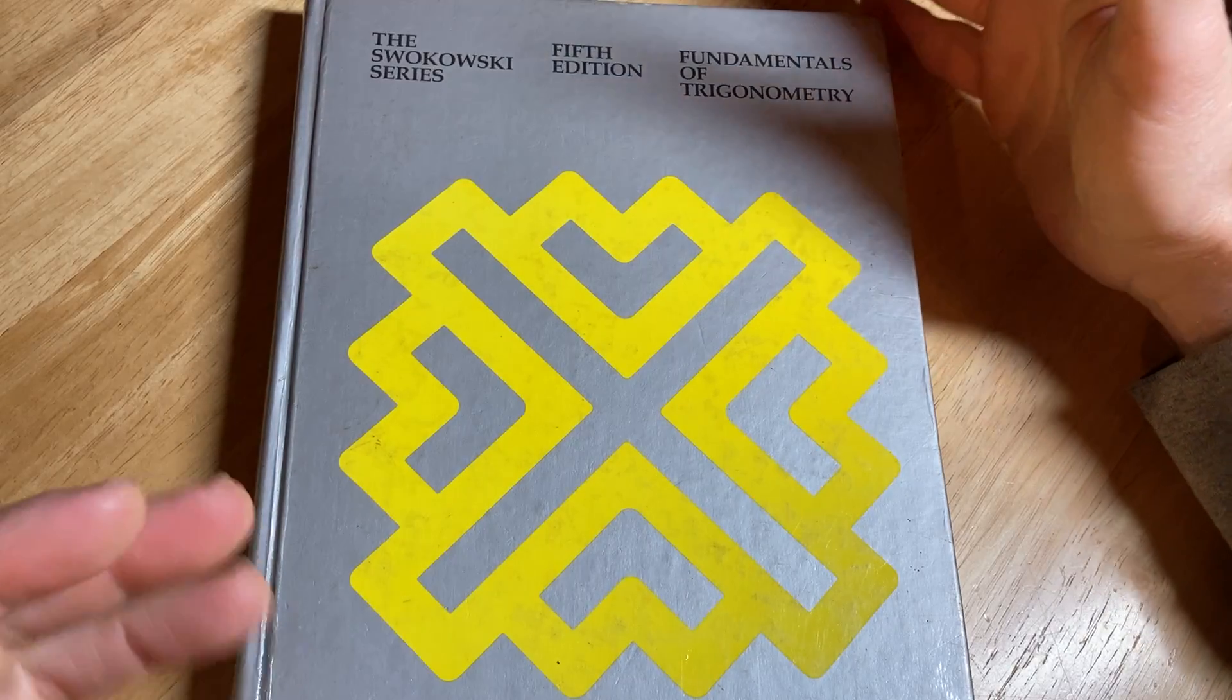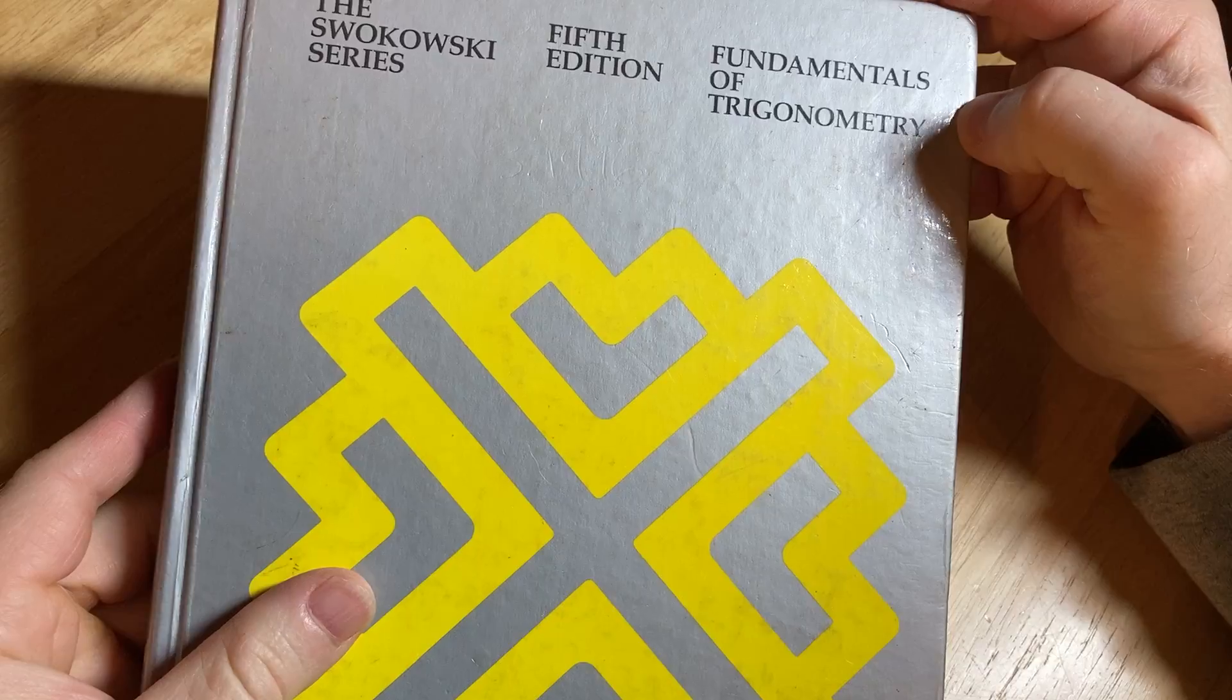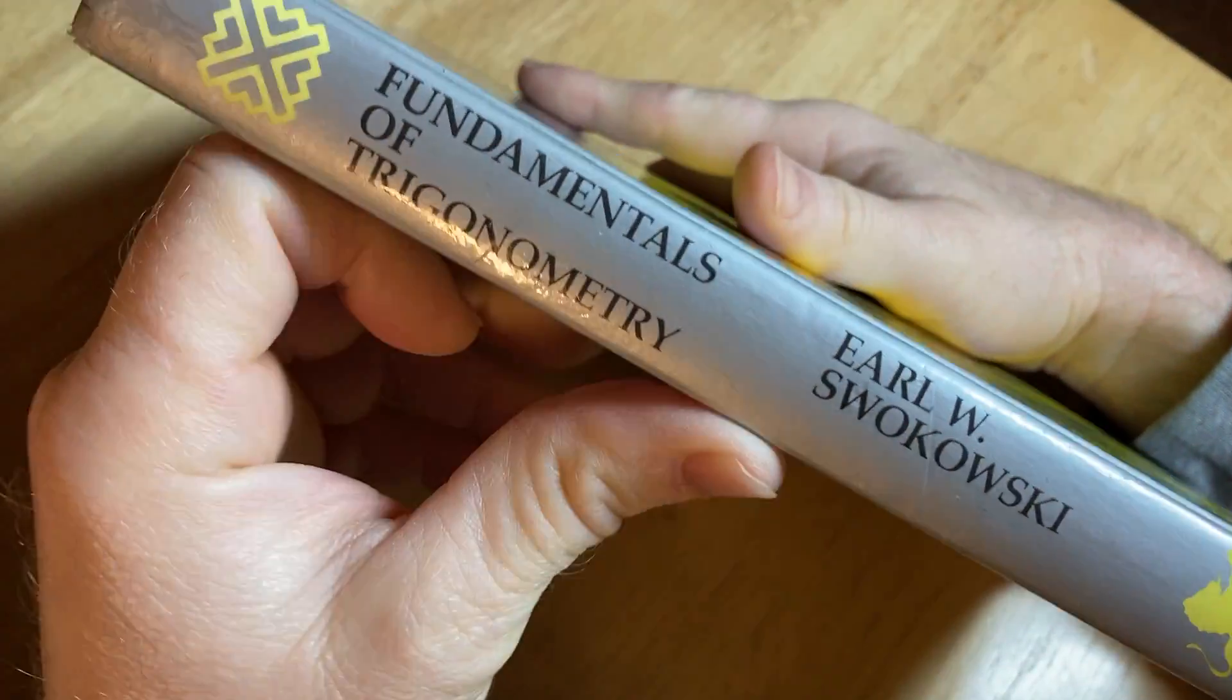This is an old book on trigonometry. It's actually an entire book on trigonometry. It's called Fundamentals of Trigonometry. It's from the Swakowski series. It's the fifth edition.